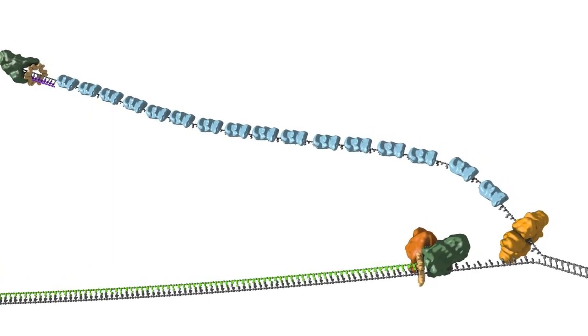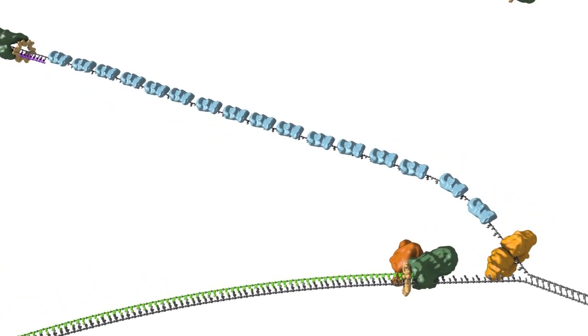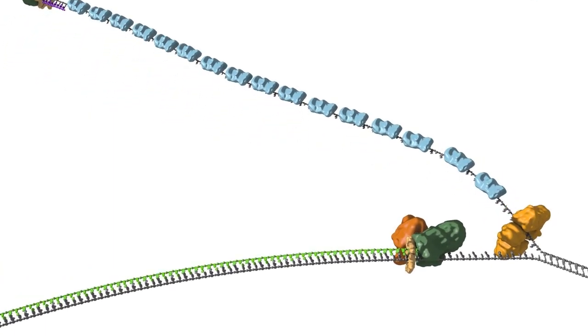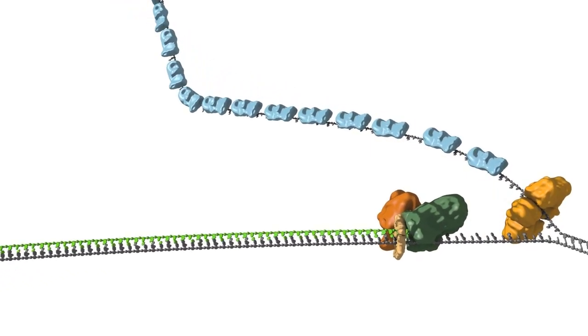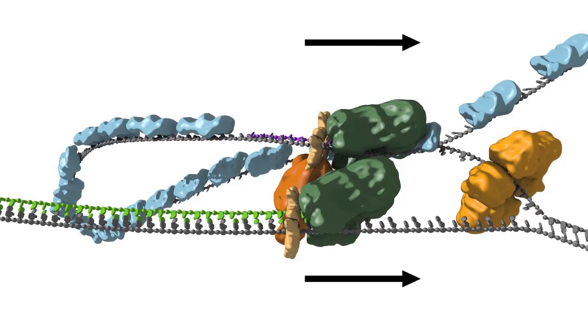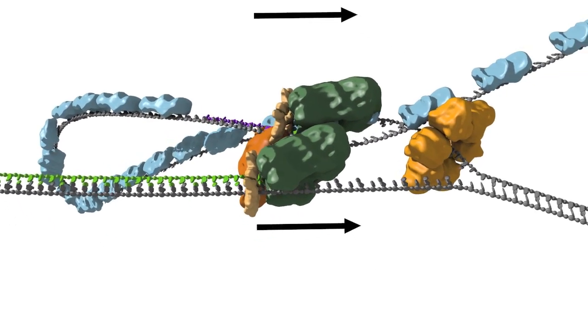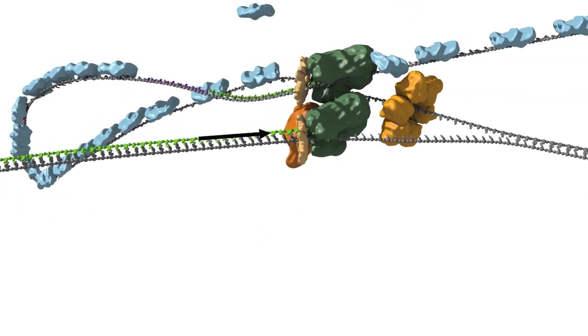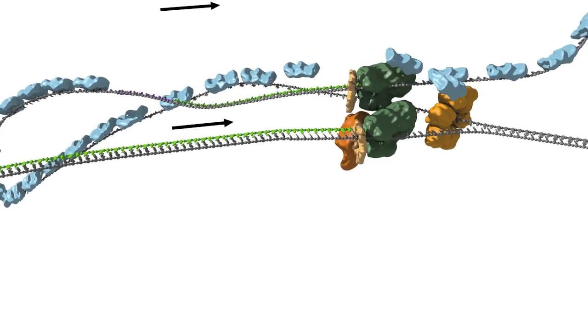In order for the two polymerases to move together with the helicase as the fork moves, the DNA template for the lagging strand must be looped around so that both polymerases are moving in the same direction. With the polymerases now coupled, DNA replication can proceed coordinately on both the leading and the lagging strand.